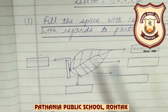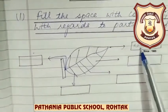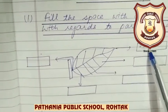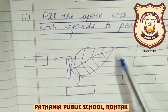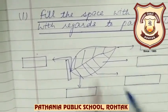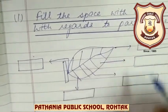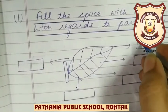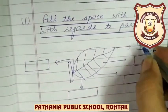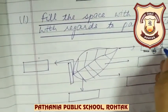This is the diagram of the leaf and you have to fill these boxes. These are the parts of the leaf. First is the Tip — this is the tip of the leaf, and that is called the leaf apex.